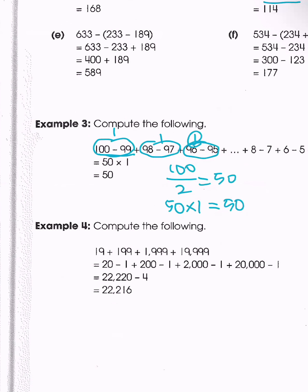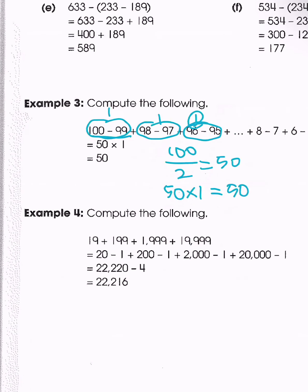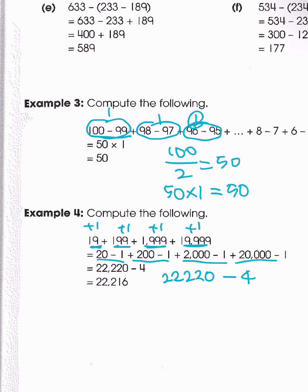For the next example, we have numbers ending in 9. If we add 1 to each: 20 minus 1, plus 200 minus 1, plus 2,000 minus 1, plus 20,000 minus 1. We can think of that as 22,220 minus 4, which easily gives us 22,216.